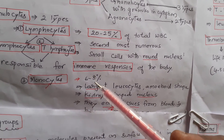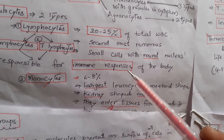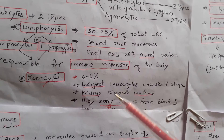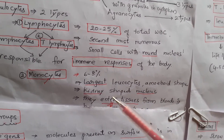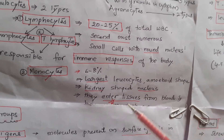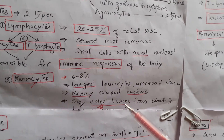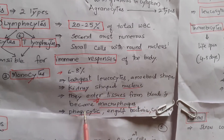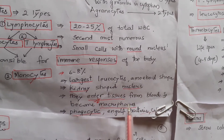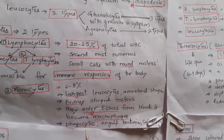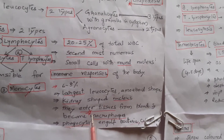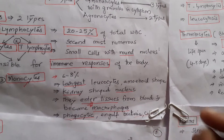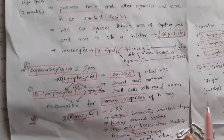Monocytes constitute about 6 to 8 percent of WBCs. These are the largest leukocytes, amoeboid in shape, with a kidney-shaped nucleus. They enter the tissues from the blood and become macrophages. They are phagocytic in function and engulf bacteria and cell debris.